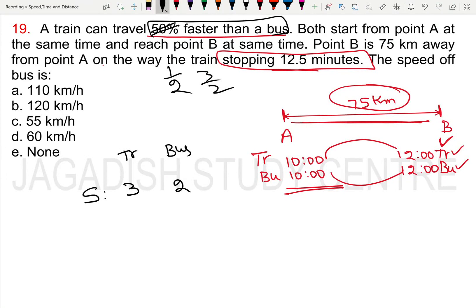Speed ratio is 3:2, so time ratio is inverse: 2 to 3. The train takes 2 unit time and the bus takes 3 unit time.